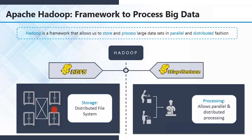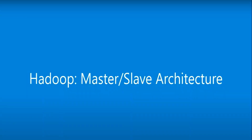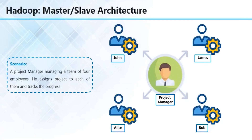Storing big data with HDFS, which stands for Hadoop Distributed File System — all the large amounts of data that we dump get distributed over different machines. These machines are on the internet and are called the Hadoop cluster.